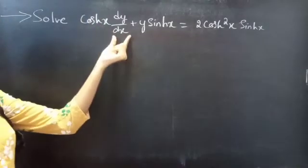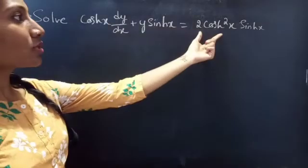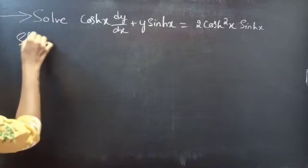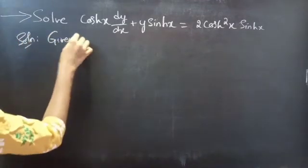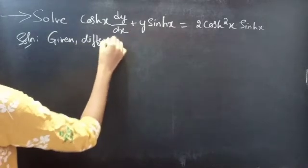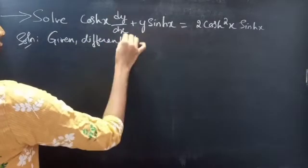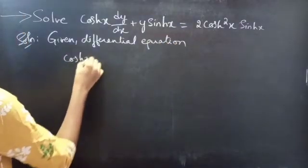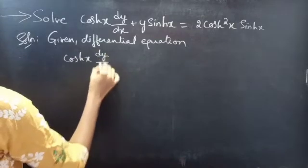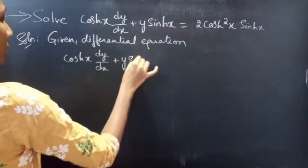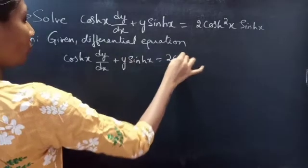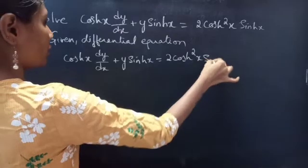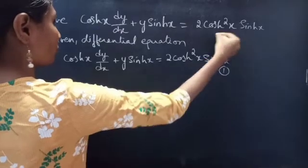Problem to solve: cos Hx into dy by dx plus y sin Hx equals to 2 cos H square x into sin Hx. Given differential equation: cos Hx into dy by dx plus y sin Hx equals to 2 cos H square x into sin Hx. Consider it as equation 1.